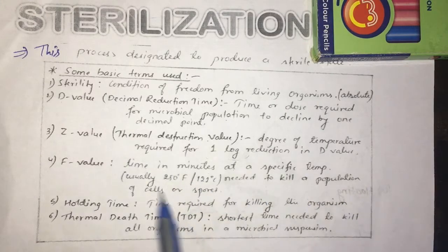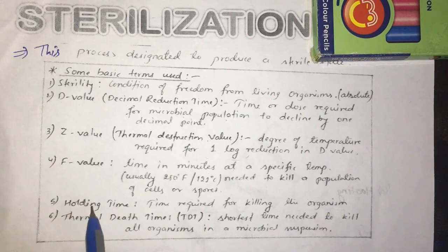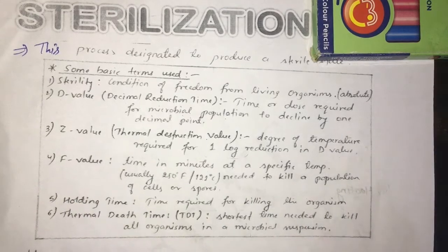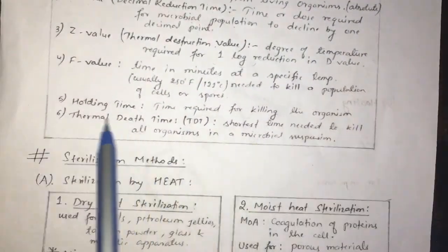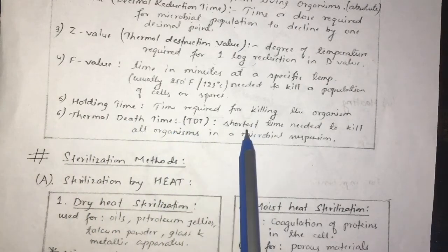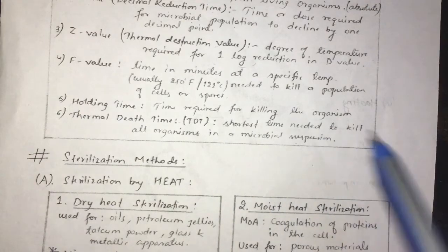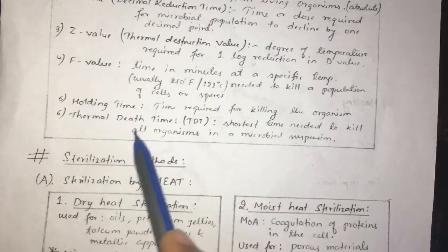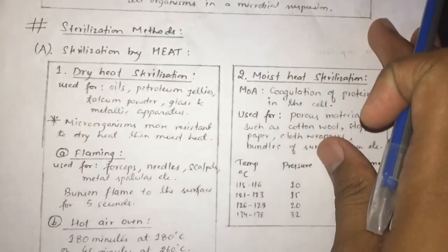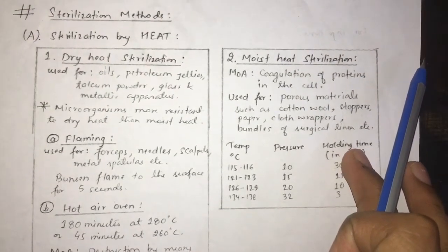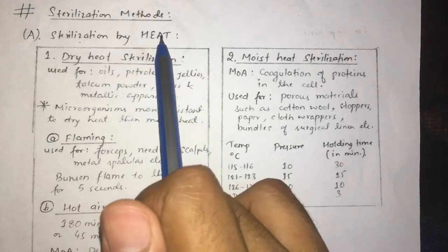The F value is the time needed to kill a population of cells or spores. Holding time is the time required for killing the microorganism. Thermal death time is the shortest time needed to kill all organisms in a microbial suspension. These are the key basic terms used in sterilization.